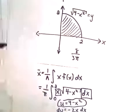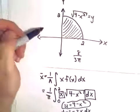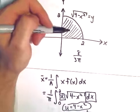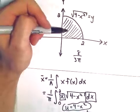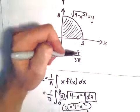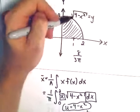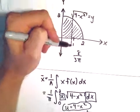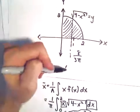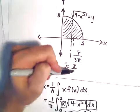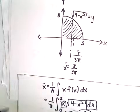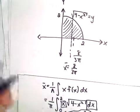So 8 over 3 pi, so whatever number that is, maybe not the most user-friendly number. A little bit smaller than 1, right? Pi is a little bit bigger than 3. So there's 1. So that means our x bar is going to be a little bit to the left of that. And we could go through and compute y bar using the other formula.